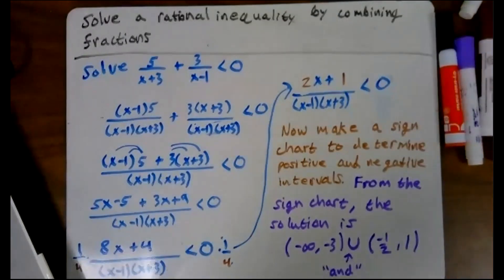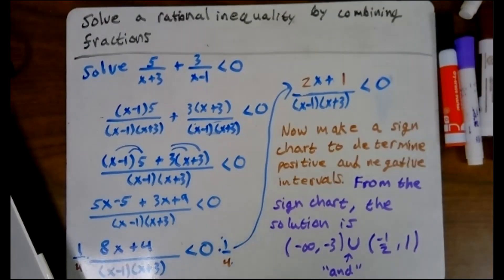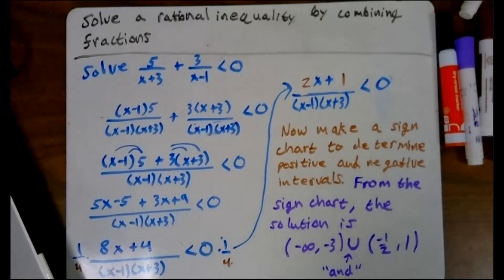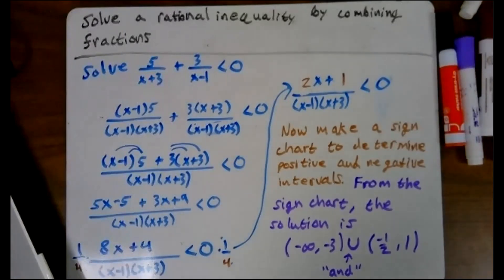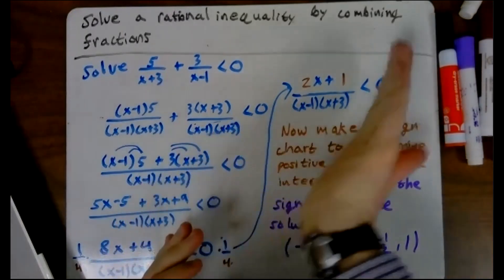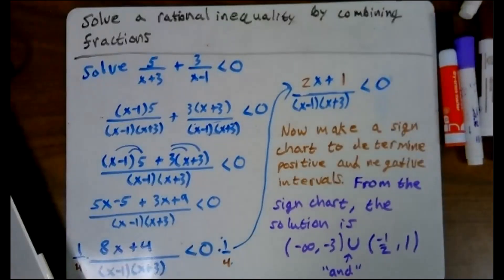That is where we can leave off the lesson for today. Sign charts are useful for more than just polynomials and rationals — you can make a sign chart for any type of function. They're actually really useful in calculus — for determining concavity, which tells us whether a function is curving downward or upward, and in a process called optimization, which is a very important application of calculus. If you go on to a calculus class, this likely won't be the last time you use it.